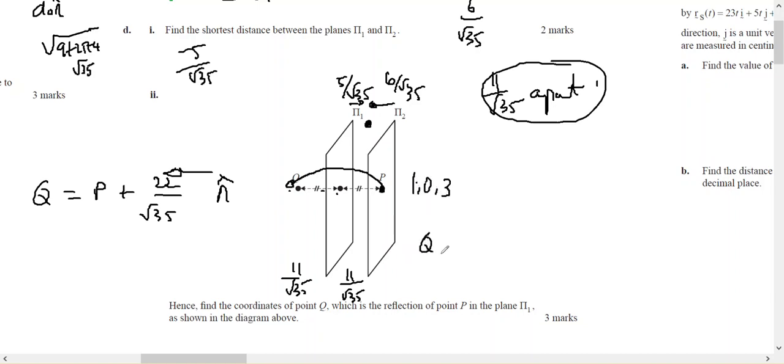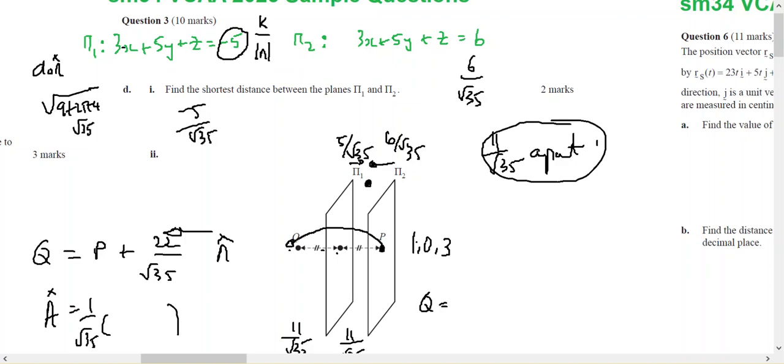Therefore, Q is going to be... my normal will be 1 on root 35, and my normal will be 3i plus 5j plus k.